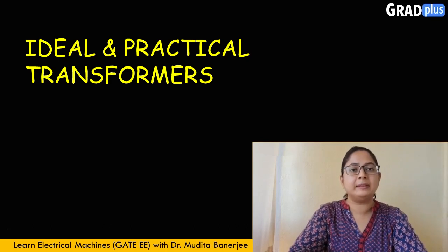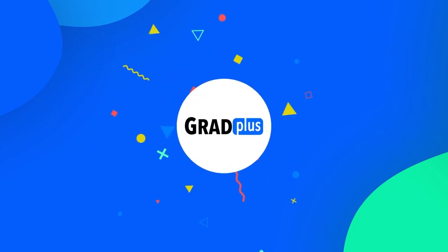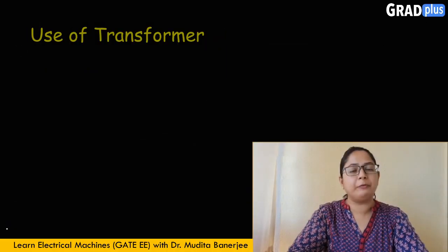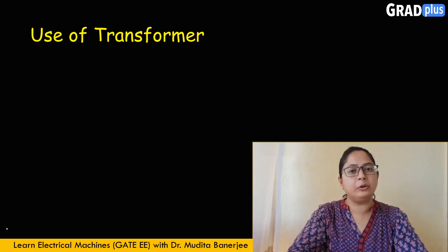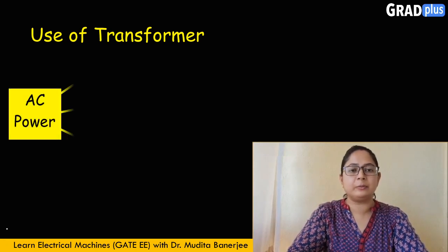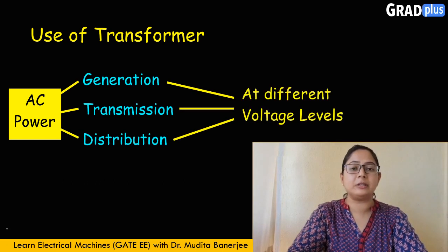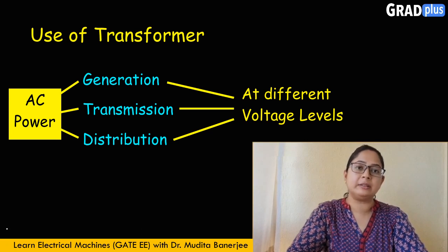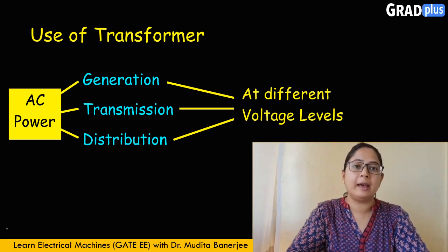Hello everyone. In this video, we will try to understand what is the difference between an ideal and a practical transformer. Before starting, we will see what is the use of a transformer. The generation, transmission and distribution of AC power takes place at different voltage levels. These changes in the voltage levels in the power system are provided by using a stationary device known as a transformer.